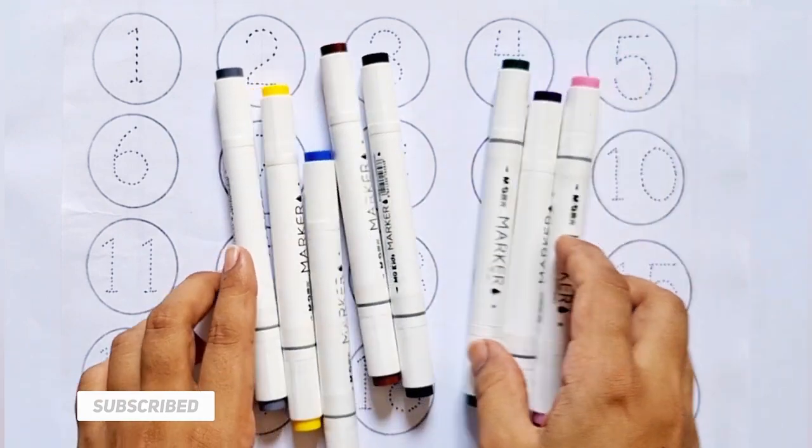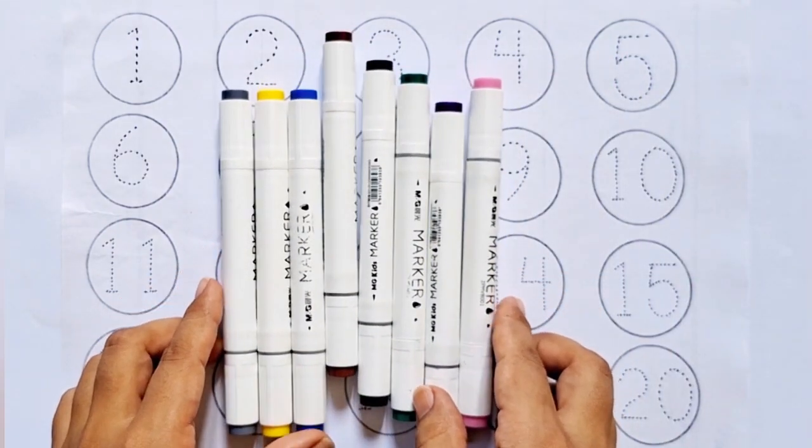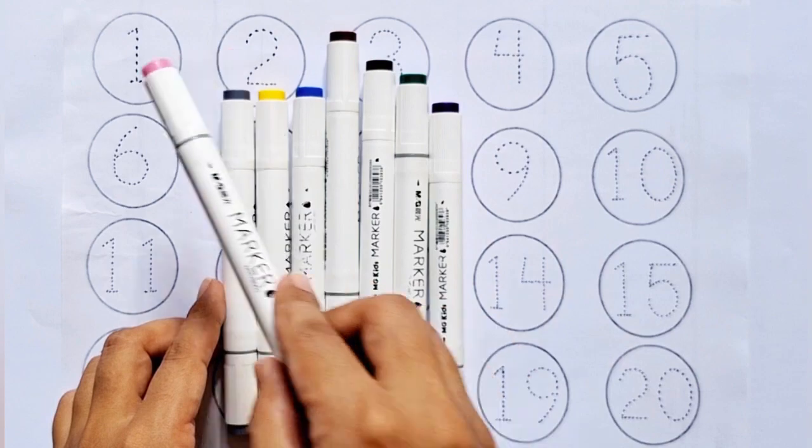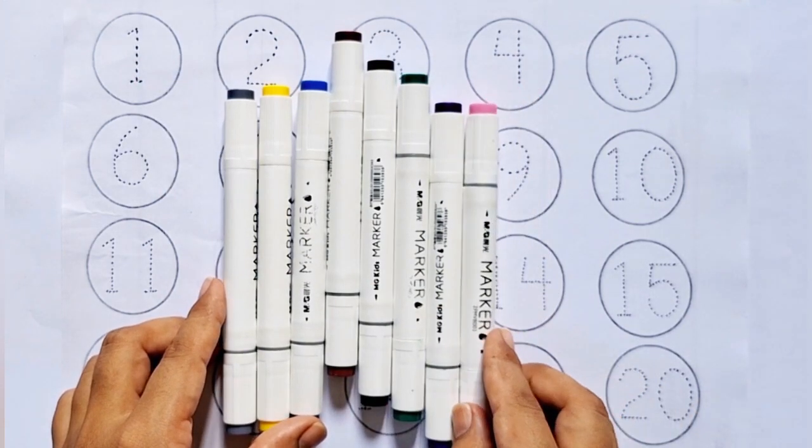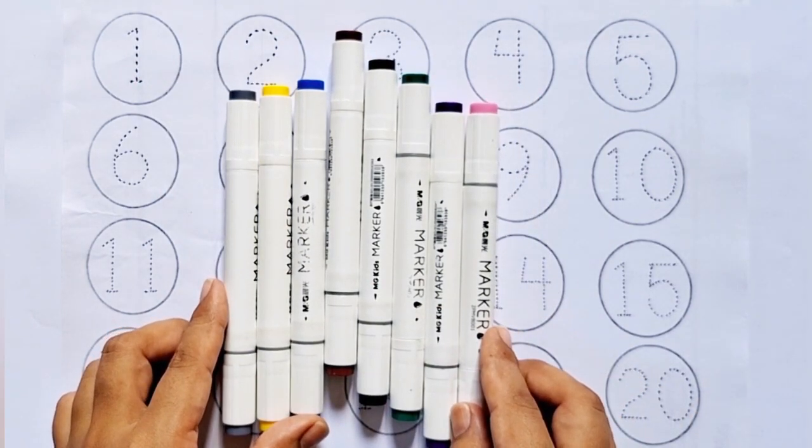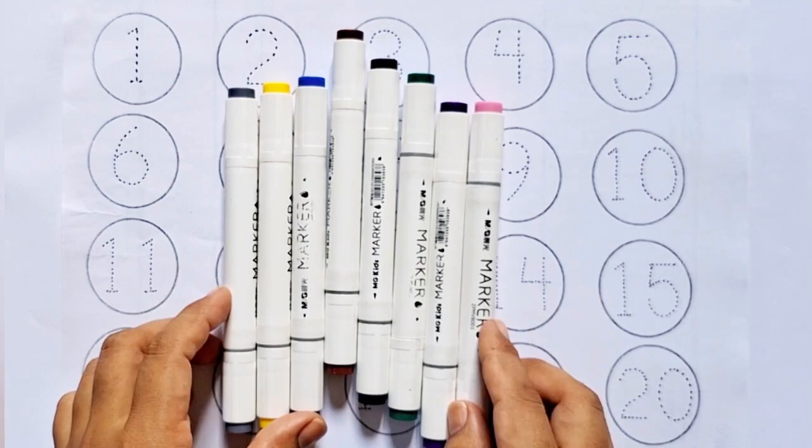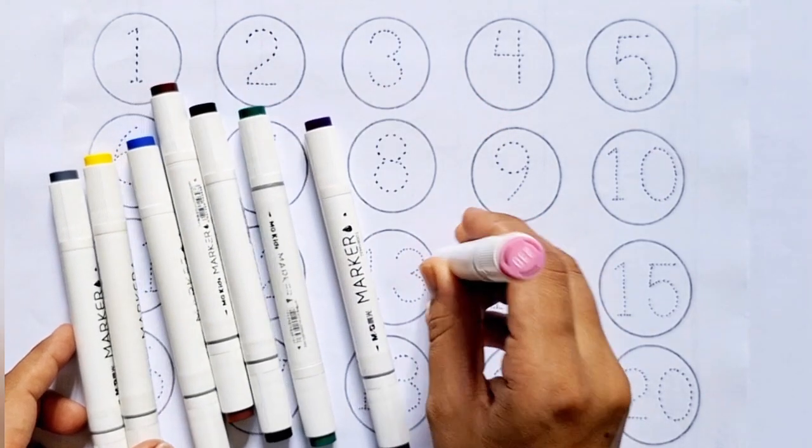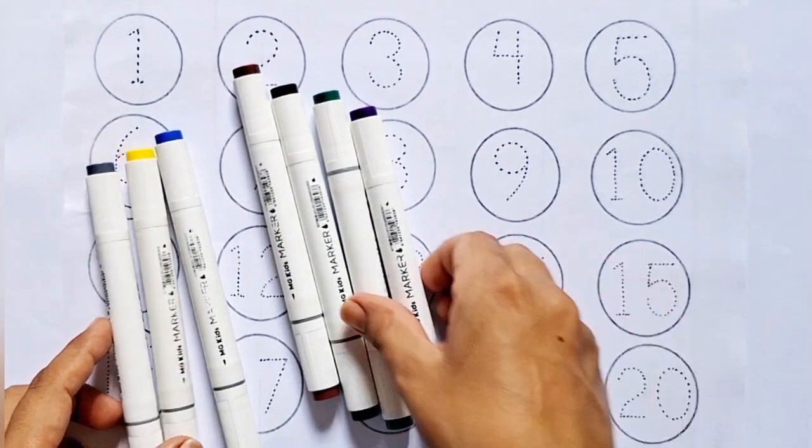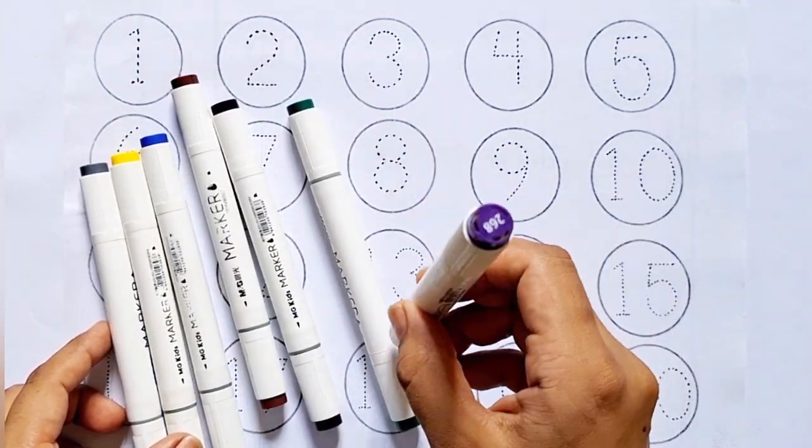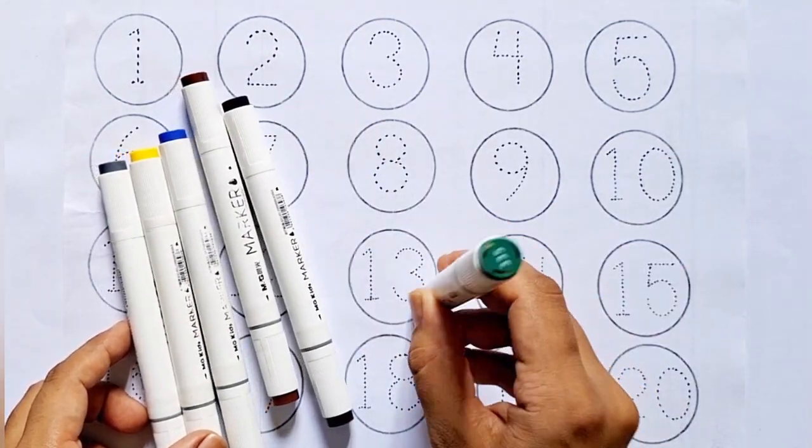Hello kids, how are you all? In today's video I'm going to teach you counting from 1 to 20. Are you ready? Let's get started. But before we begin, let's learn some color names: baby pink color, purple color, dark green color, black color, brown color, dark blue color, yellow color, gray color.